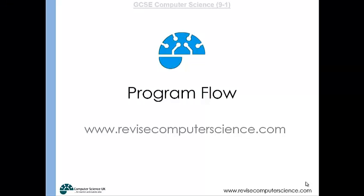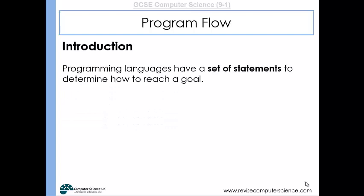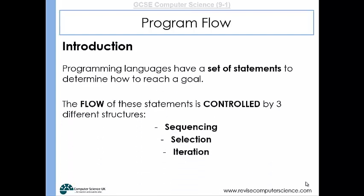This video will look at program flow. Programming languages have sets of statements to determine how to reach a goal, and the flow of these statements is controlled by three different structures: sequencing, selection, and iteration.